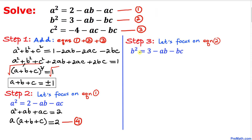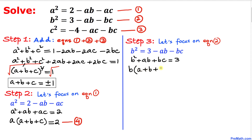Now let's focus on equation 2. Moving negative ab and negative bc to the left hand side, we can see that b is common and can be factored out, giving us b(a + b + c) = 3. Let's call this equation number 5.